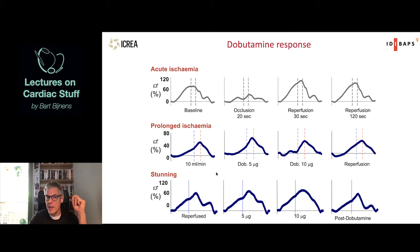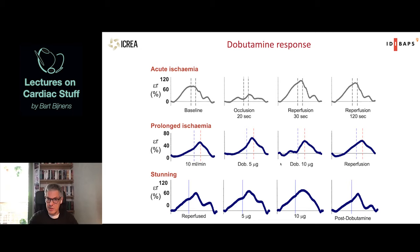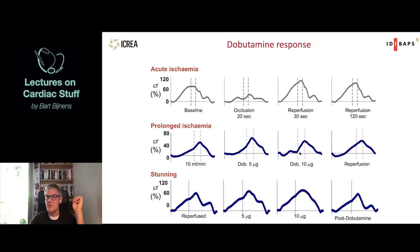In many cases you need some kind of provocation - whether dobutamine or exercise testing - to differentiate different substrates or highlight abnormalities. Even a relatively low dose of dobutamine (the maximum dose is 40 micrograms, sometimes with additional atropine or adenosine) clearly exaggerates what you see with ischemia while more or less normalizing what you see in stunned myocardium.